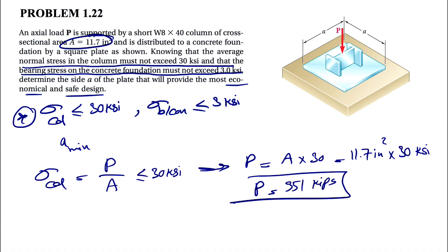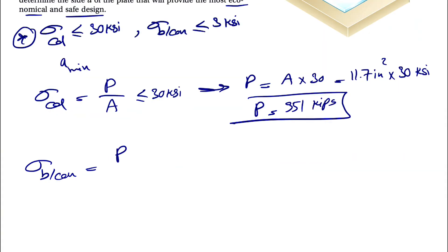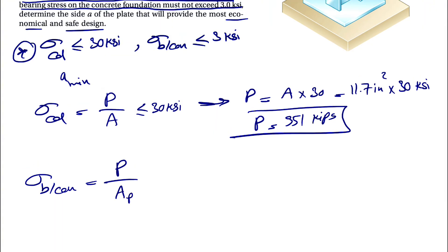We have the same force in the concrete foundation, but a different area which is related to A that we need to figure out. For the bearing stress on the concrete foundation, we have the same force P but a different area. We can show this as A_p, the area of the plate.